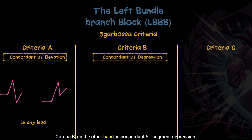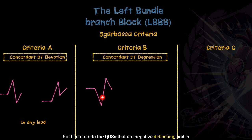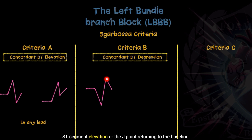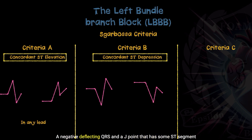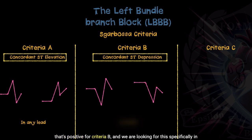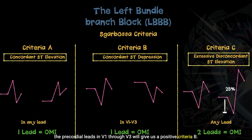Criteria B, on the other hand, is concordant ST segment depression. This refers to the QRS complexes that are negative deflecting. In the negative deflecting QRS, we should see some degree of ST segment elevation or the J point returning to the baseline. A positive criteria B looks like a negative deflecting QRS with a J point that has some ST segment depression or does not go back to the isoelectric baseline. We are looking for this specifically in the precordial leads V1 through V3.